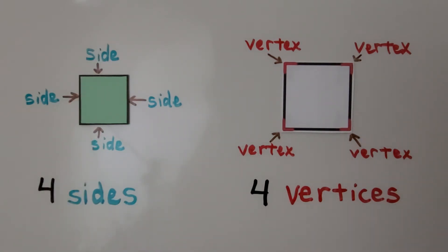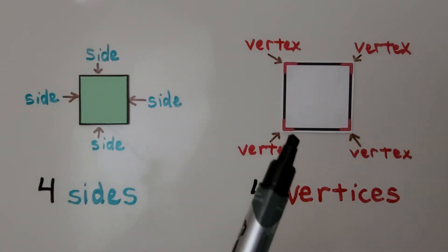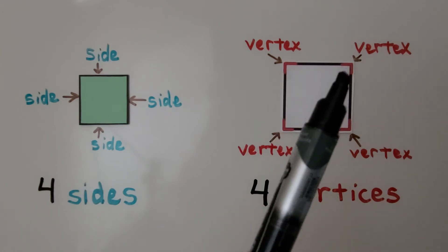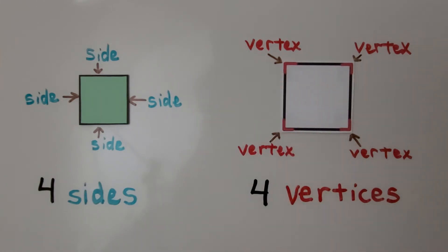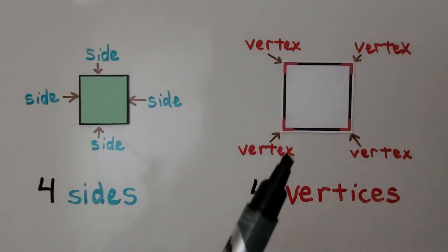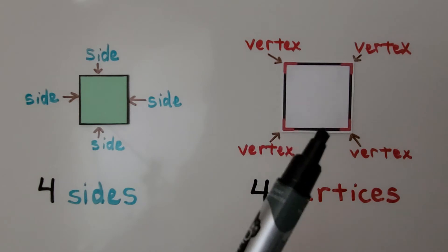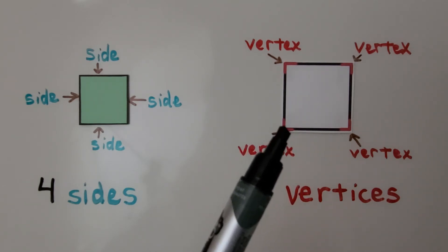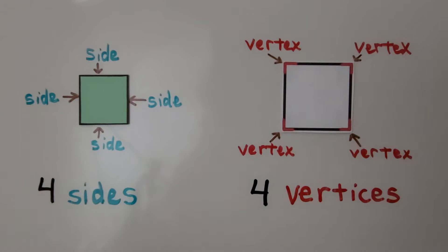Squares have four corners. A corner is where two sides meet each other. They meet at the corner, and each corner is called a vertex. When we have two or more, they're called vertices.